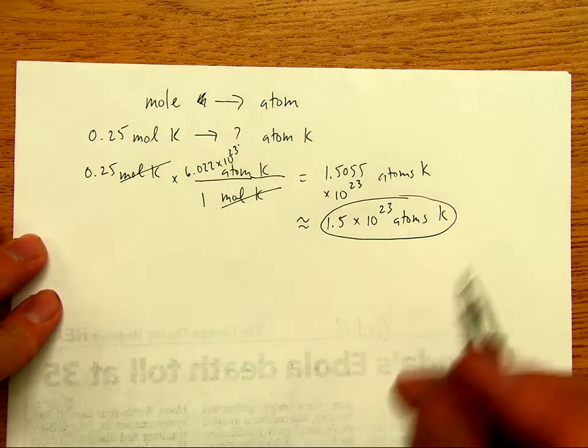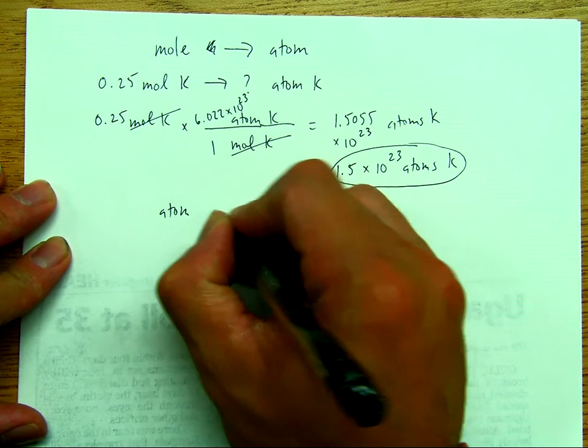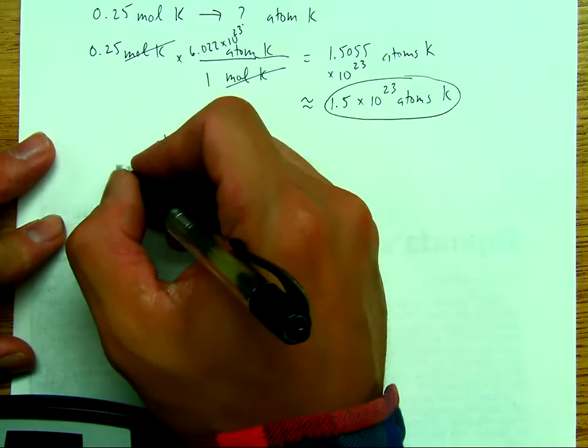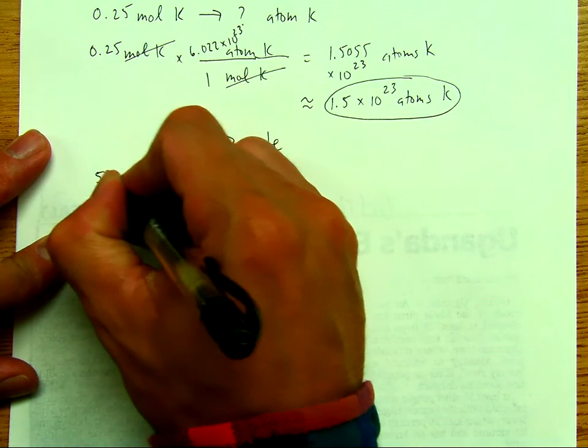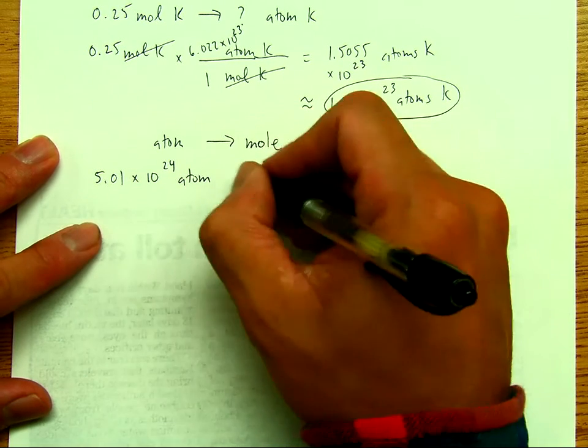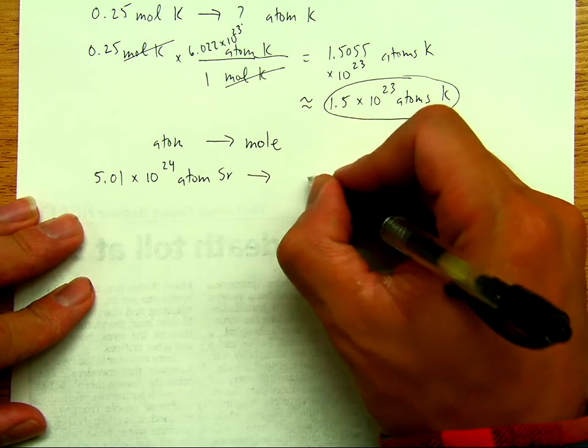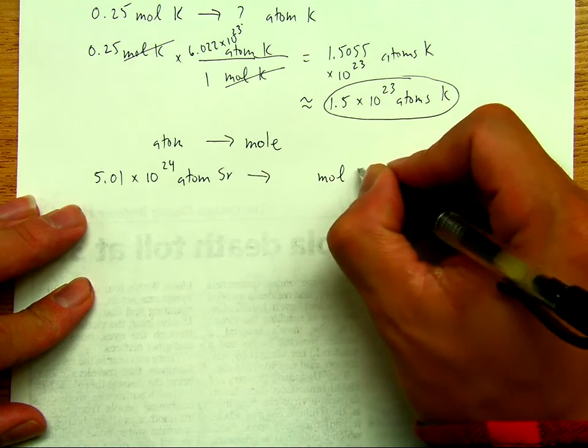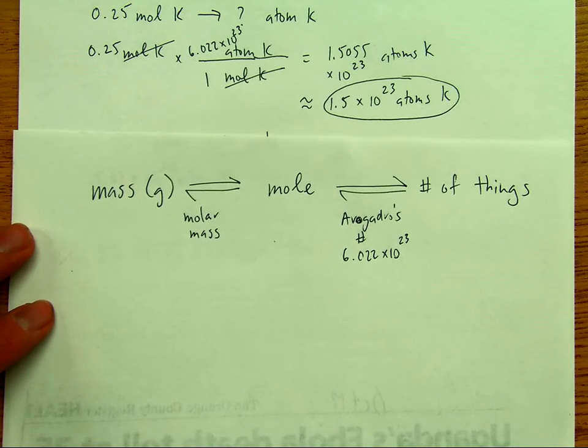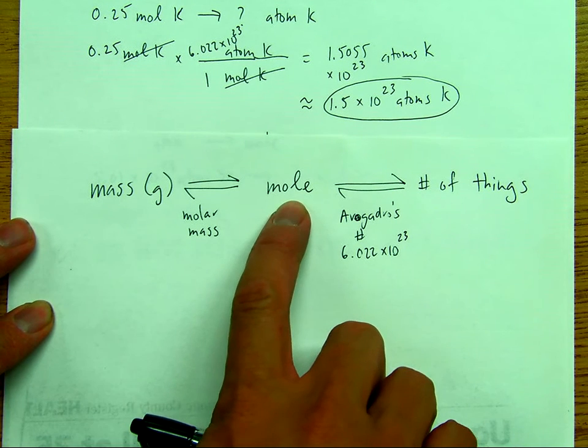In the second example that we'll work on, we'll convert from atoms to mole. Here we have 5.01 times 10 to the 24th atom of strontium, Sr, and we want to convert this to mole of strontium. So let's take a look again here at our concept map. We're at number of things, we're at number of atoms, and we want to convert to mole.